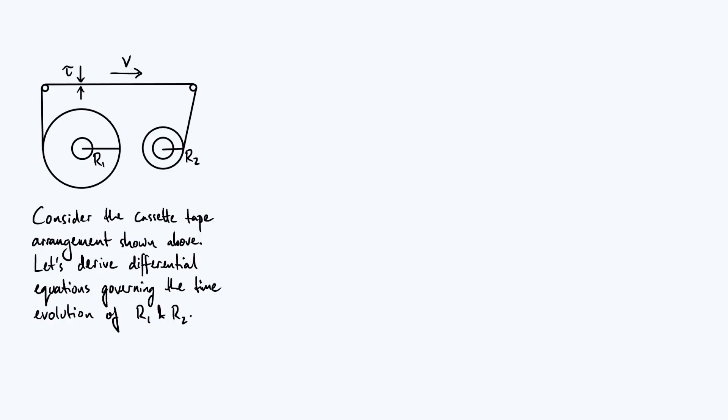Because I've drawn that velocity arrow pointing to the right, you can see that the tape is exiting the spool on the left and going onto the spool on the right, and therefore R1 is going to be decreasing over time, while R2 will be increasing over time. We're going to assume that the tape thickness, τ, is constant, which is a pretty realistic assumption.